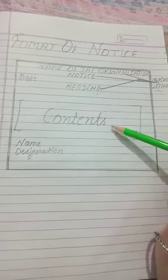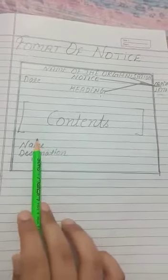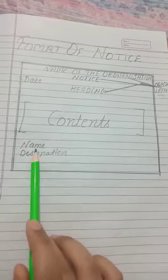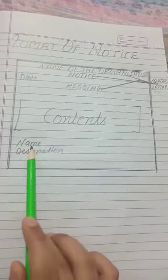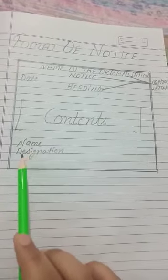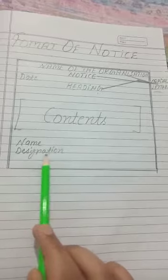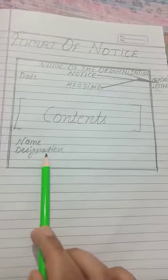After the contents are complete, we will again leave one line and then write the name — the name of the person who is issuing the notice. Below the name, we will write the designation or post of the person who has issued the notice.